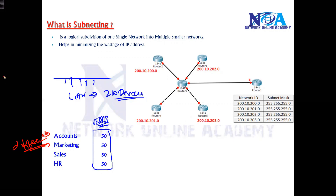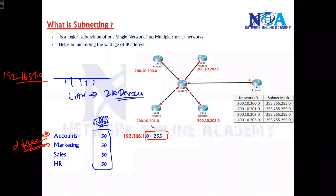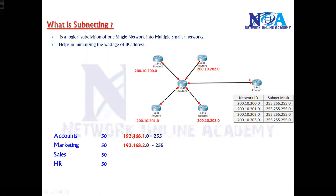I decided to go with the 192.168.1.x network for the Accounts department, assigning IP addresses from 192.168.1.0 to .255. Out of that range, I'm assigning just 1 to 50, since the first and last addresses cannot be used. Similarly, for Marketing I'm using 192.168.2.x, for Sales 192.168.3.x, and for HR 192.168.4.x.